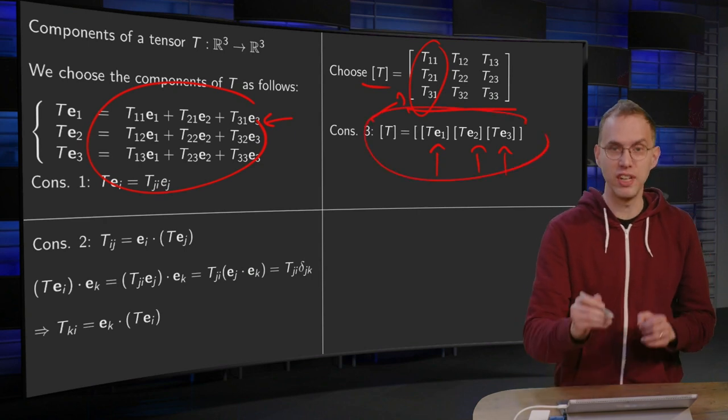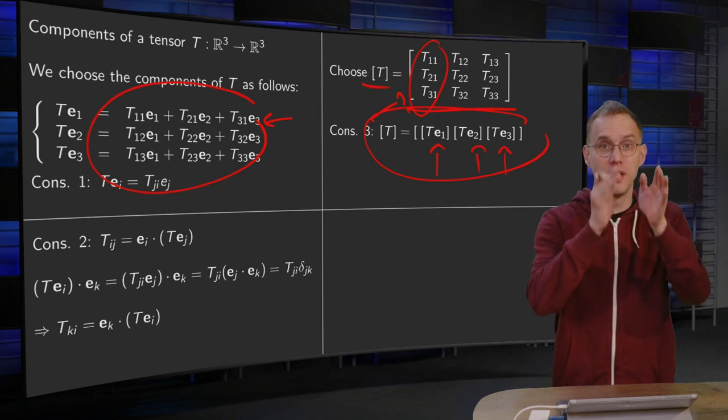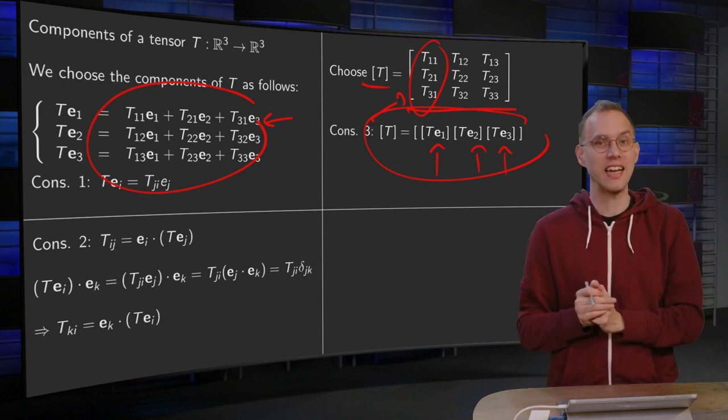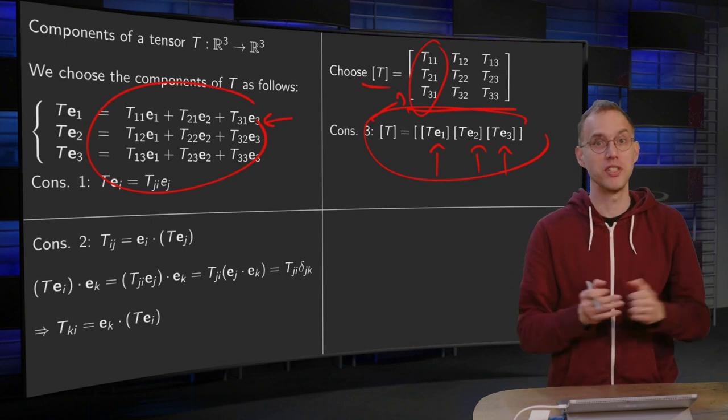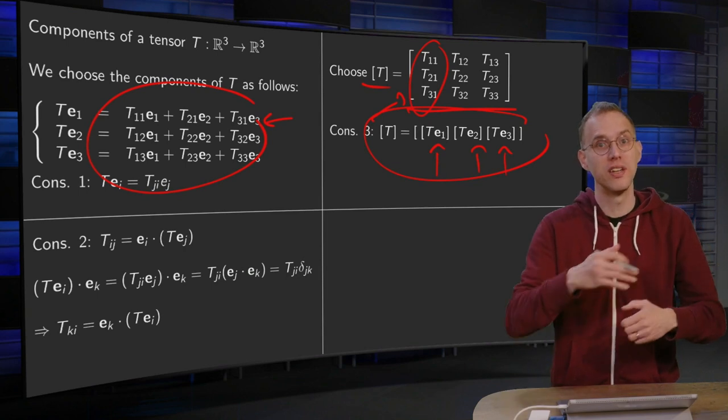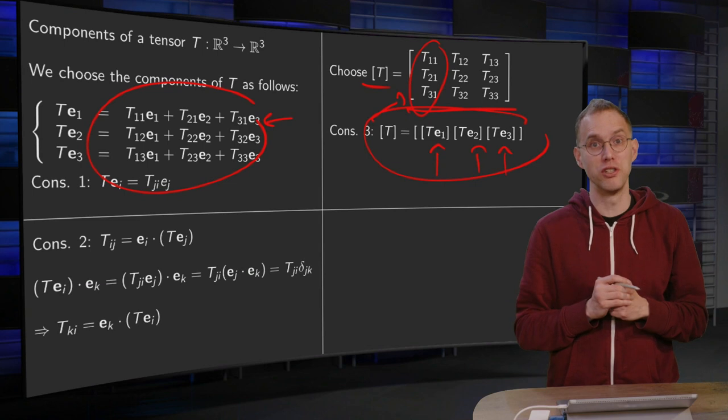So a consequence of this definition over here is consequence three, that the matrix of T just consists of the columns T of E1, T of E2, T of E3, and that's exactly the same as you learned for linear mappings in linear algebra. So that is why this definition is so convenient, because you can really copy and paste everything you know from linear algebra.